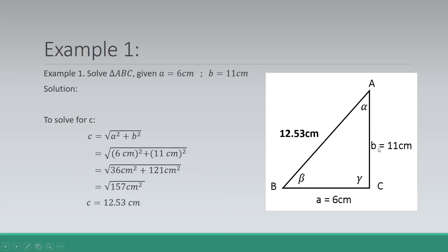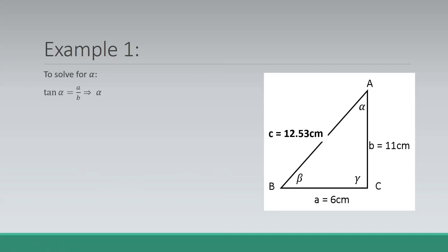Now that we have the measures of these three sides, we can solve for the values of these two angles. To solve for alpha, we can use the tangent of alpha, which is equal to the side opposite over the adjacent side. We'll use the inverse tangent of A over B, so inverse tangent of 6 over 11, which gives us 28 degrees 36 minutes and 38 seconds.